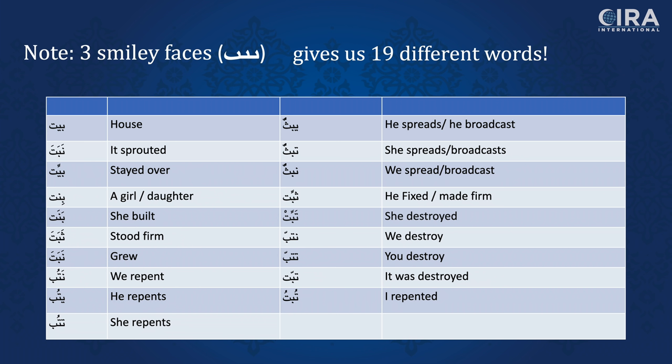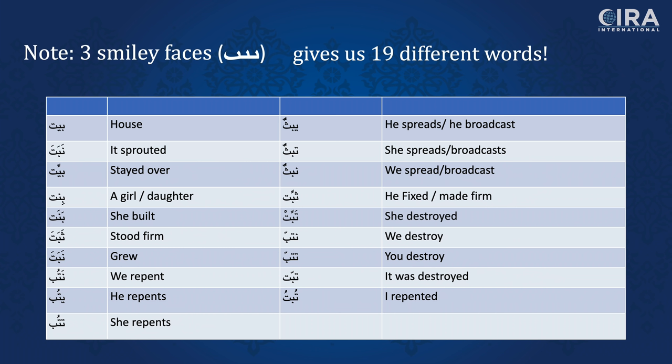This is the beginning of the karaat conundrum. For example, some readings say 'call' and others say 'call' as an imperative — the same root, different readings. With five different possibilities for one smiley face and three letters together, that's already 15 different possibilities — to say nothing of the three vowels: the dhamma, the kasra, and the fatha. You can imagine the enormous amount of freedom to place dots and vowels depending on what you think the context is — and that's exactly what the karaat and ahruf difficulties are.